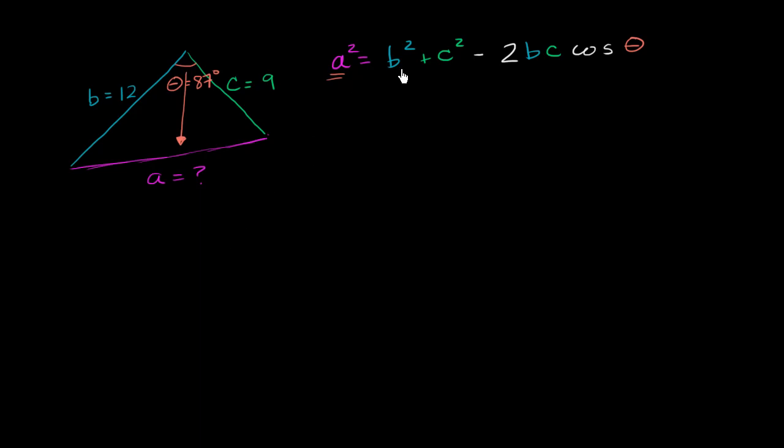So now let's solve for a because we know what b, c, and theta actually are. So a squared is going to be equal to b squared, so it's going to be equal to 144 plus c squared, which is 81.